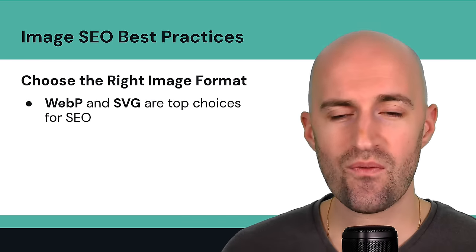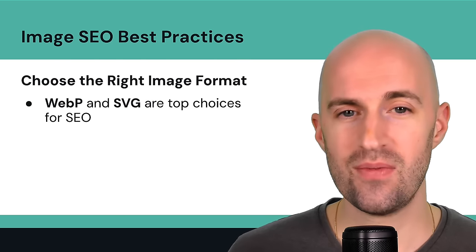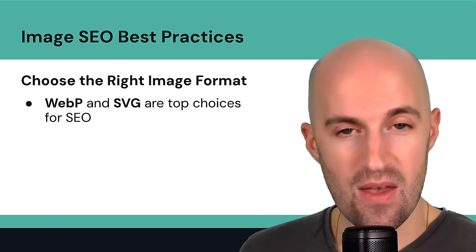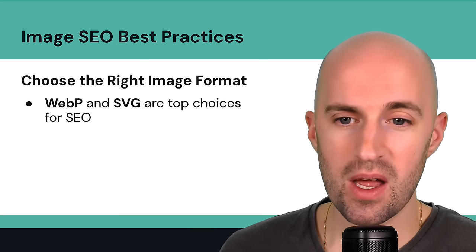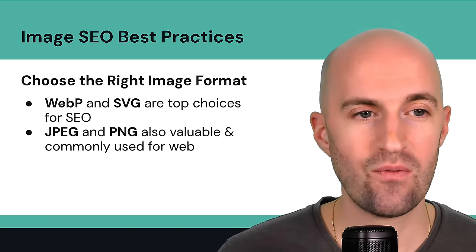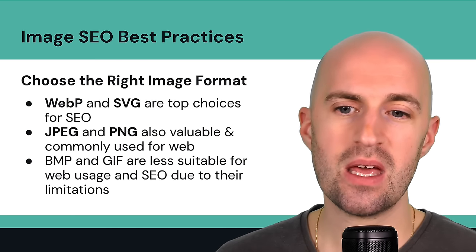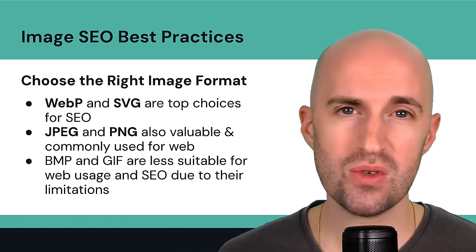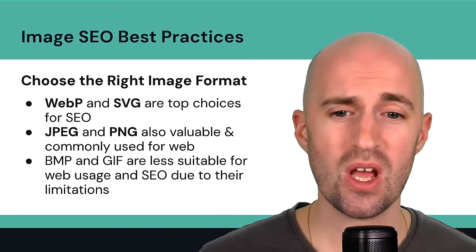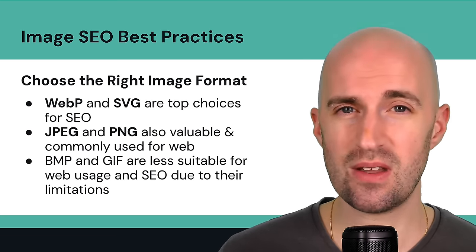To summarize image formats: the top two choices are WebP and SVG — use these if you can. The runner-ups, still widely used for SEO, are JPEG and PNG. Try to avoid BMP or GIF — they're less suitable for web usage and SEO because of their limitations and file sizes.